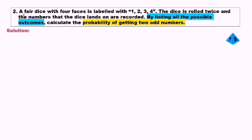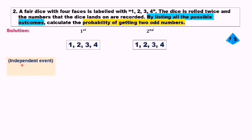Question number 2. A four-faced dice is labelled with 1, 2, 3, 4. The dice is rolled twice and the numbers that the dice lands on are recorded. By listing all the possible outcomes, calculate the probability of getting 2 odd numbers. Again, this is an independent event, and the number of sample space is 4 times 4, which equals 16. We need to list out all the possible outcomes and based on those, find the probability of getting 2 odd numbers.